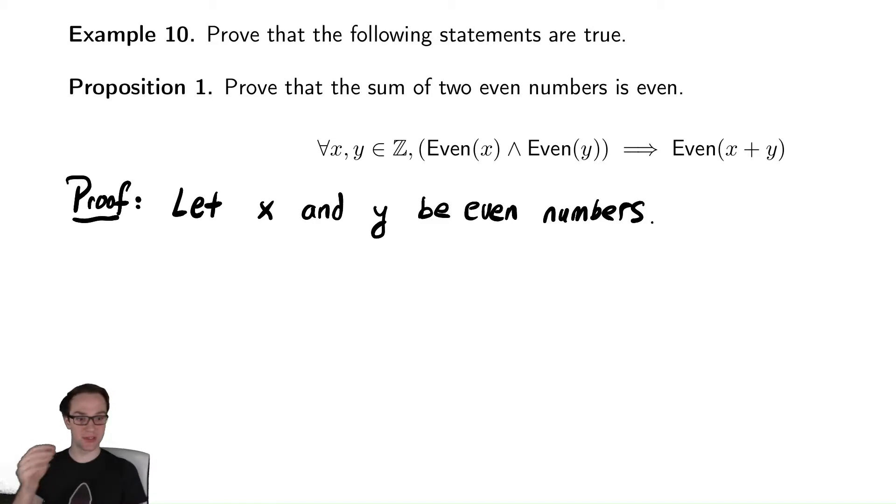I then must use logical steps to go from this to something that implies something else, to something that implies something else, until eventually I arrive at the fact that x plus y is even. This is effectively continual application of modus ponens. We suppose the hypothesis is true, which implies something, which implies something, which implies something, until we arrive at the result.